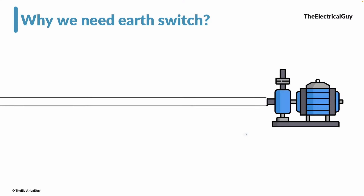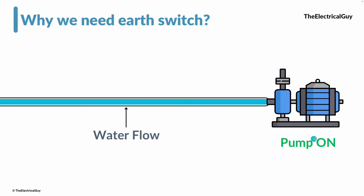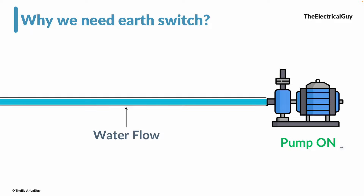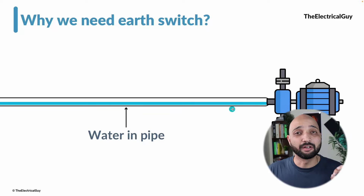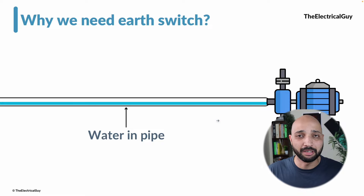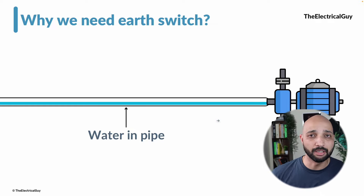To understand that, we have a simple example. We have a water pump which is pumping water, connected to a pipe delivering water to a destination. When the pump is turned on, water flows through the pipe — that is the normal operation. When the pump is switched off, it stops pumping, and water also stops flowing. But certainly there will be some water that remains in the pipe — the pipe will not become 100% empty.